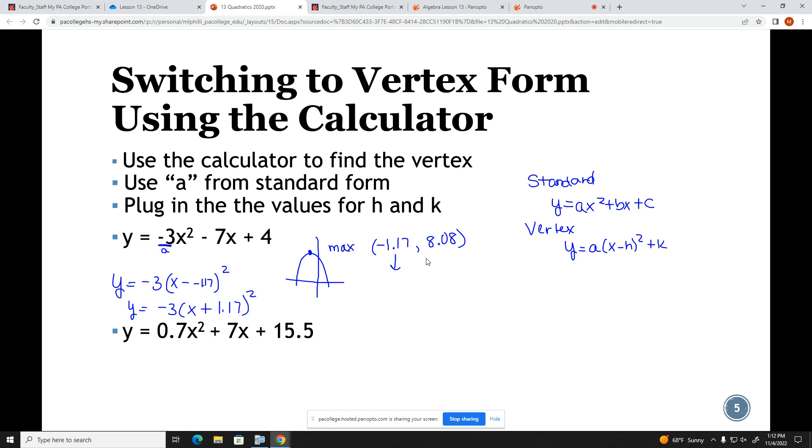We then noted that we would be using the y value as the k. So I'll put +8.08. And so this is a rewritten version of the formula that now shows us the vertex point.